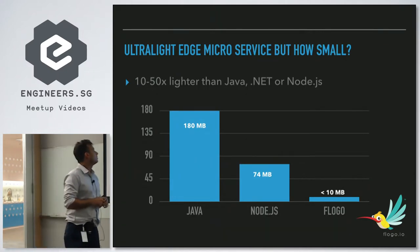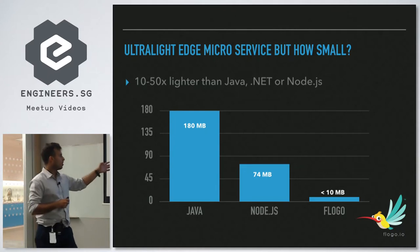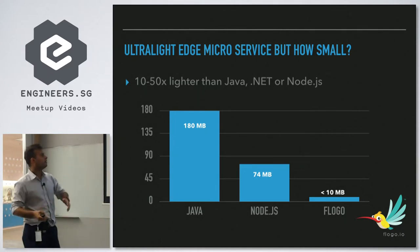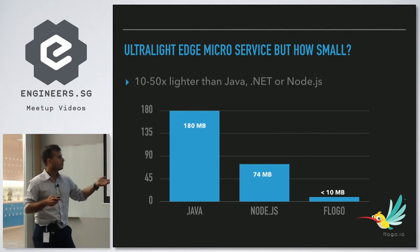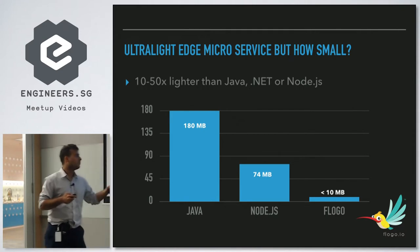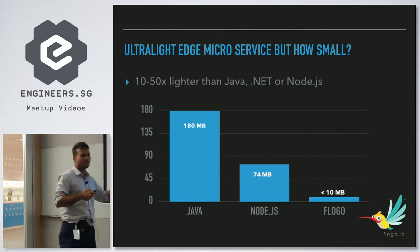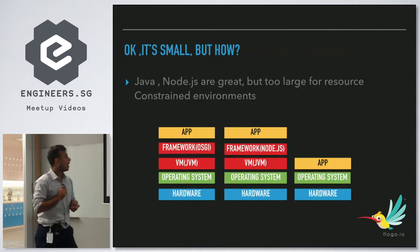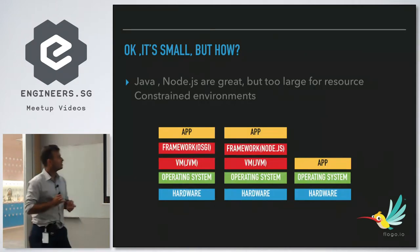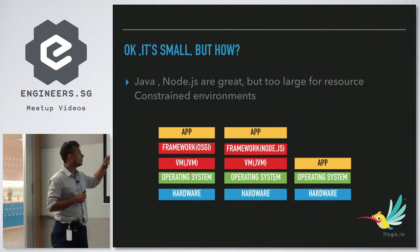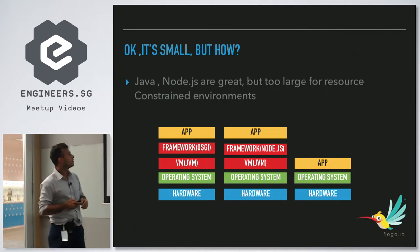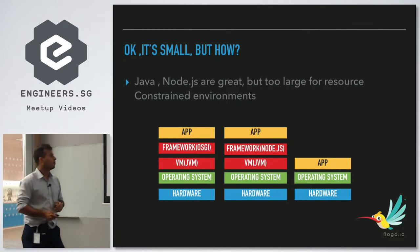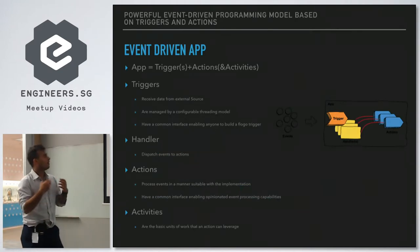FlowGo is ultra-light. Comparing binary sizes: Java produces a minimum of 180 MB, Node.js comes in at around 74 MB, but FlowGo is less than 10 MB. It's small because it removes the framework overhead and the VM layer — there's no JVM required, which is the main reason for the reduced size.